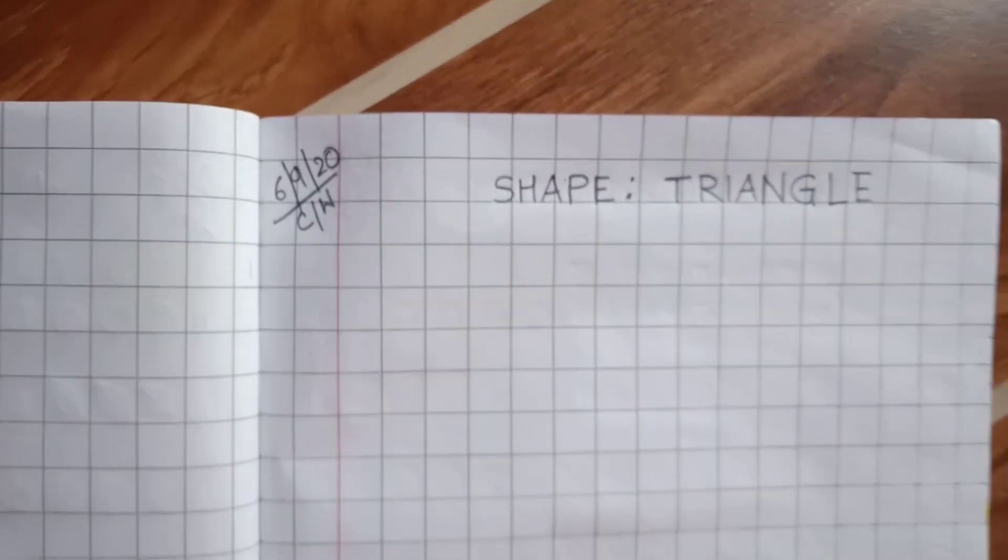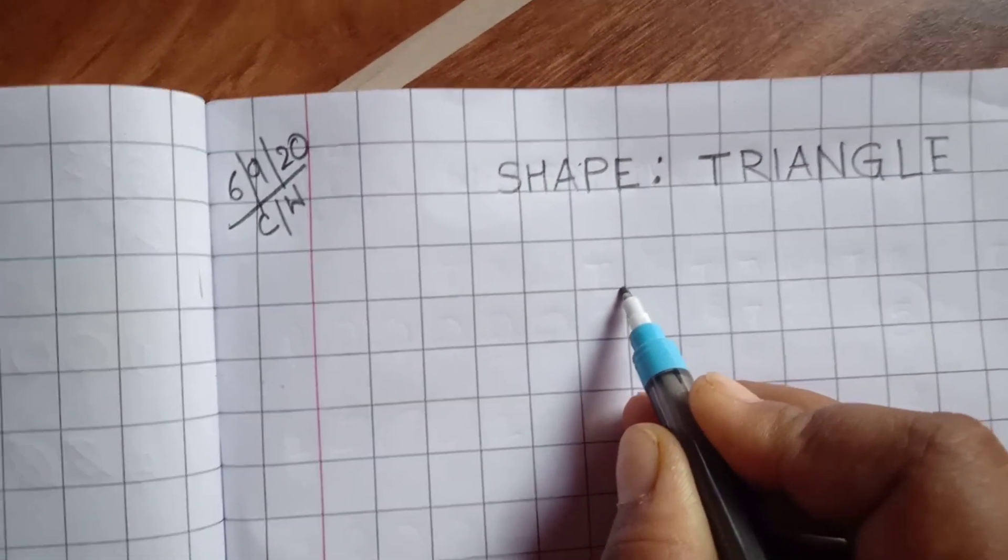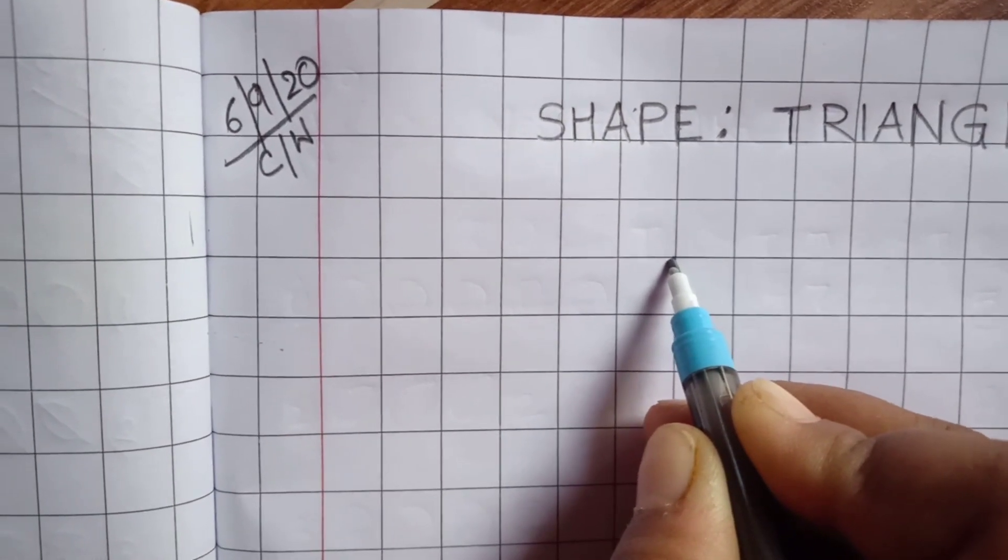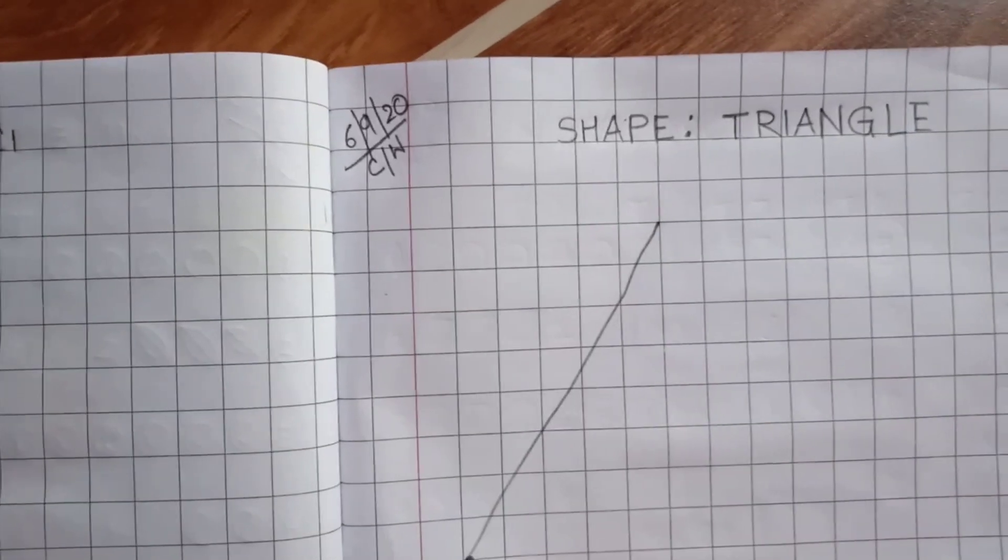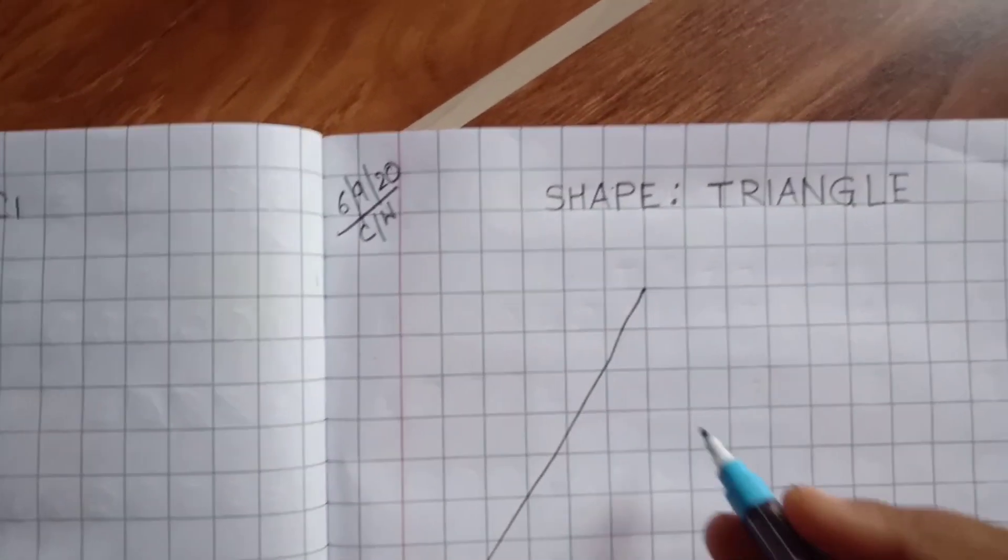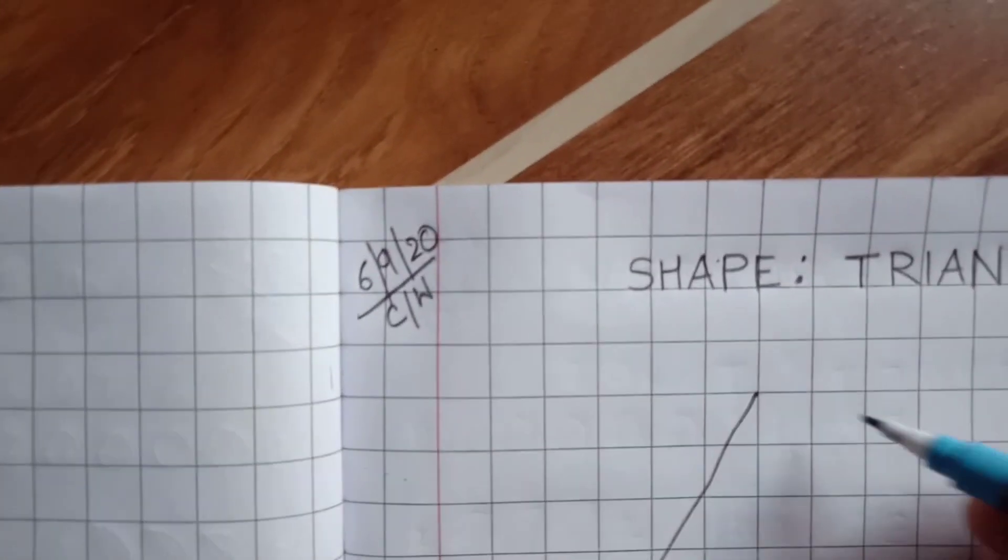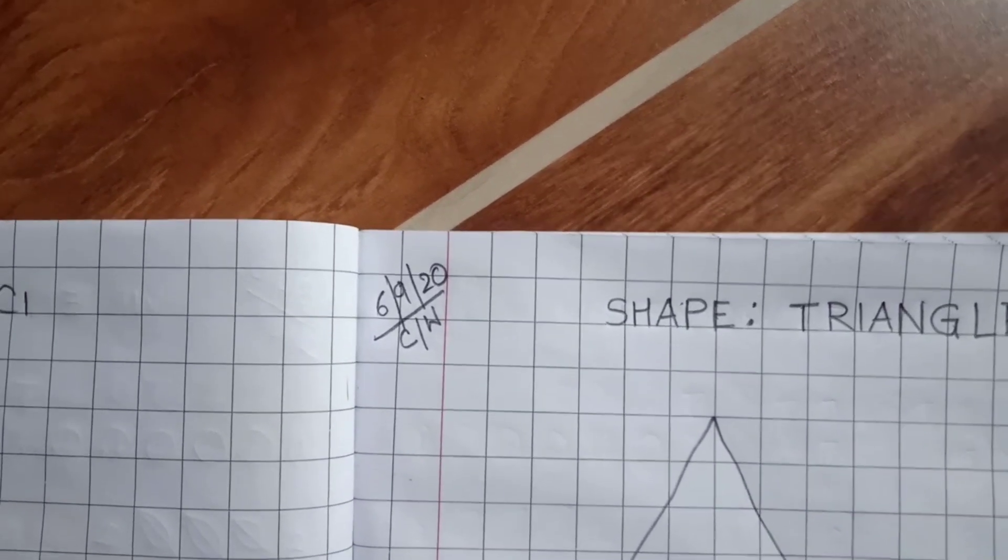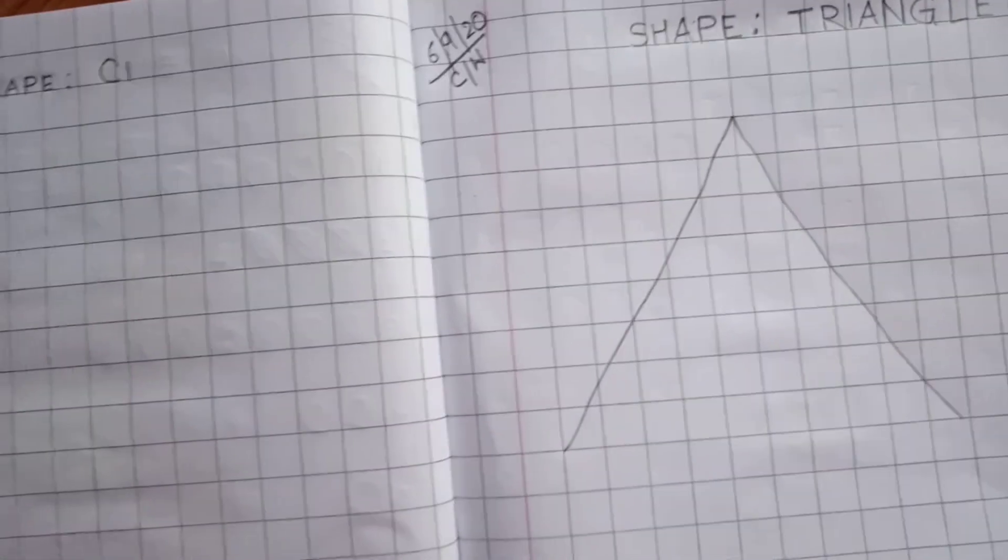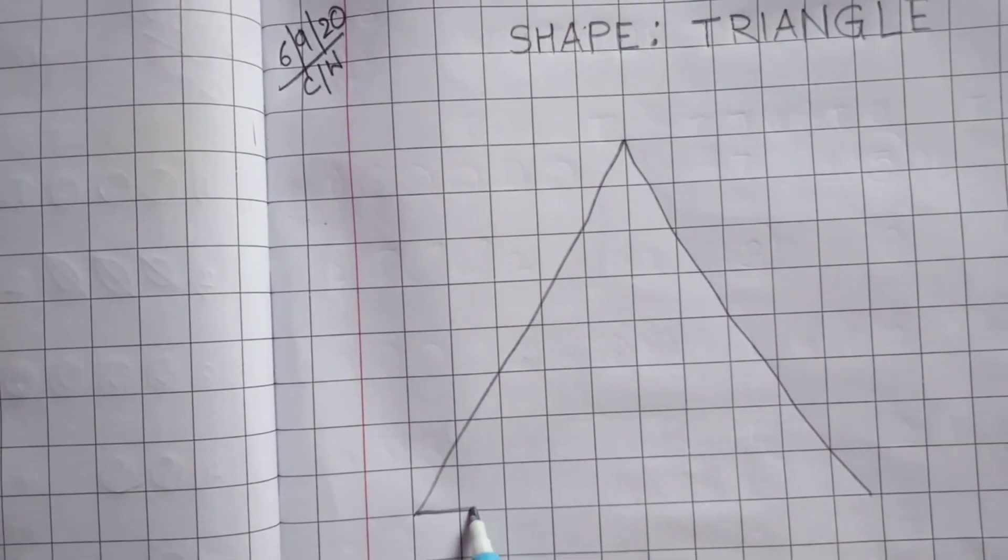So now let's start to draw. First we will start from here. Then we will draw a slanting line like this. Then again we will start from the same point. We will start from the same point.